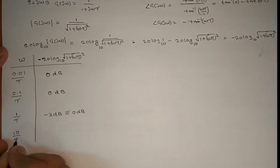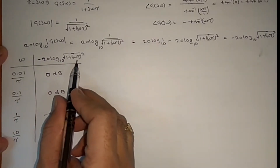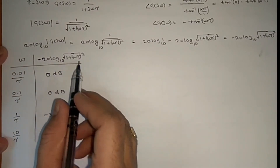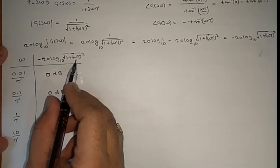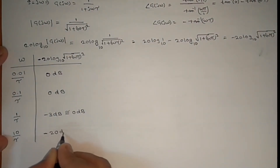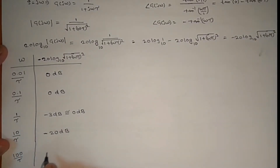At ω = 10/τ, (10)² = 100, and since 1 is very small compared to 100, this gives −20 dB. At ω = 100/τ, this becomes −40 dB.